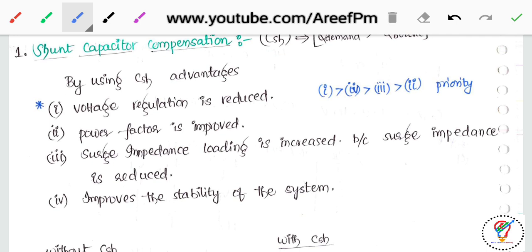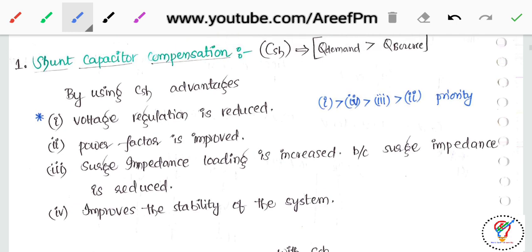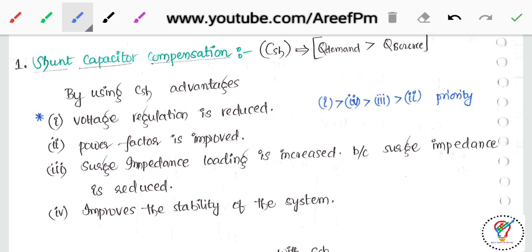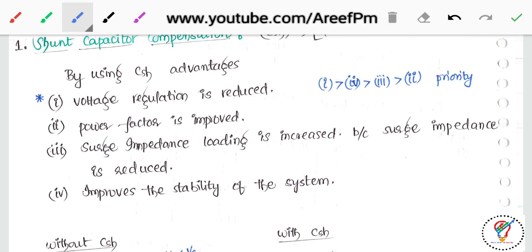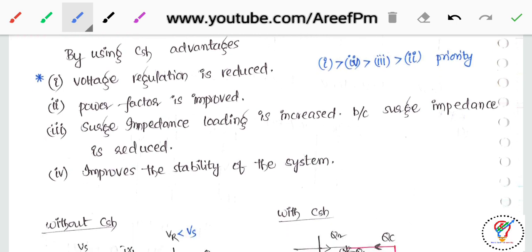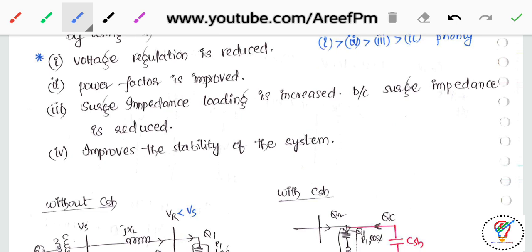The advantages of shunt capacitor compensation are: first, voltage regulation is reduced — voltage regulation is Vs minus Vr divided by Vr, and we can reduce it to zero. Second, power factor is improved from lagging. Third, surge impedance loading is increased because surge impedance is reduced — surge impedance loading is inversely proportional to surge impedance. Fourth, it improves the stability of the system by using a lower value of load angle.